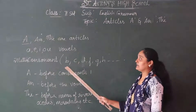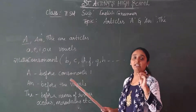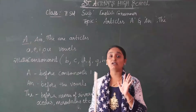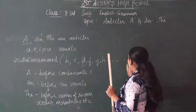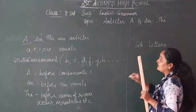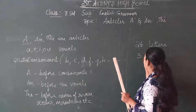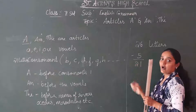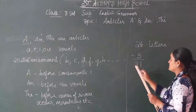The remaining 21 letters are consonants. You have A, E, I, O, U — those are 5 vowels. How many letters are there in English alphabets? There are 26 letters. So if there are 26 letters, and A, E, I, O, U are 5 letters, how many are remaining? 21 letters.